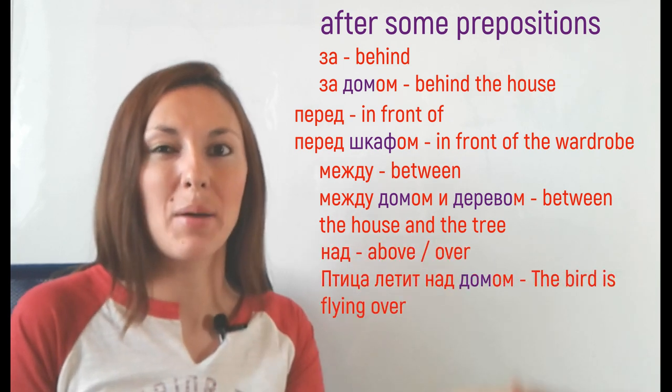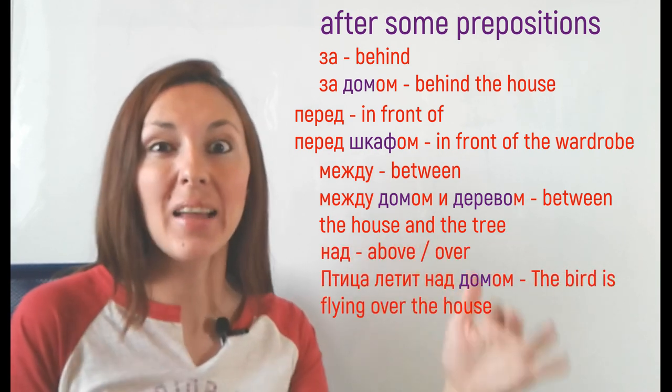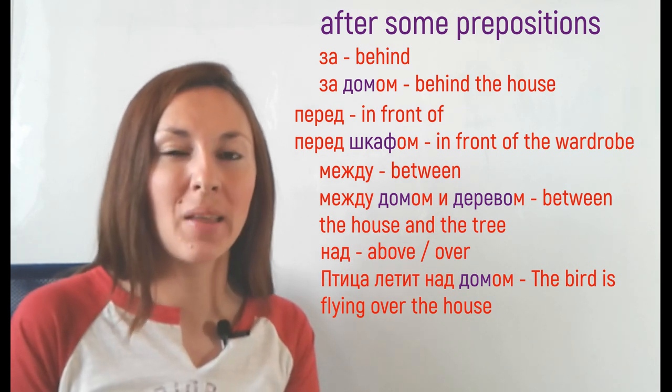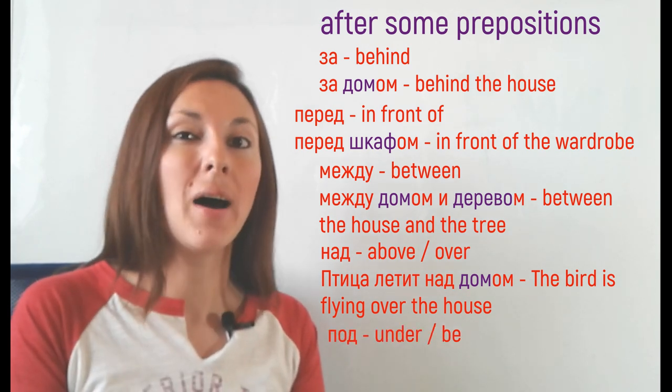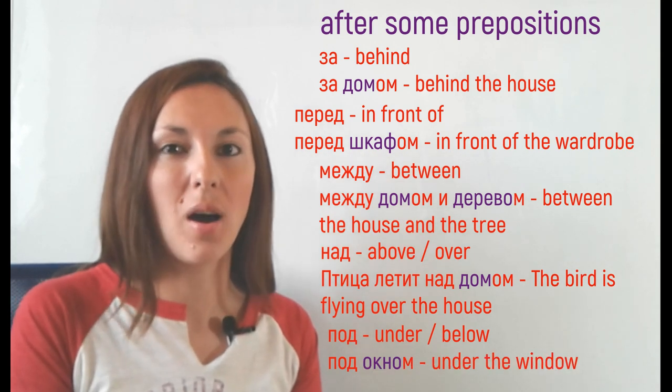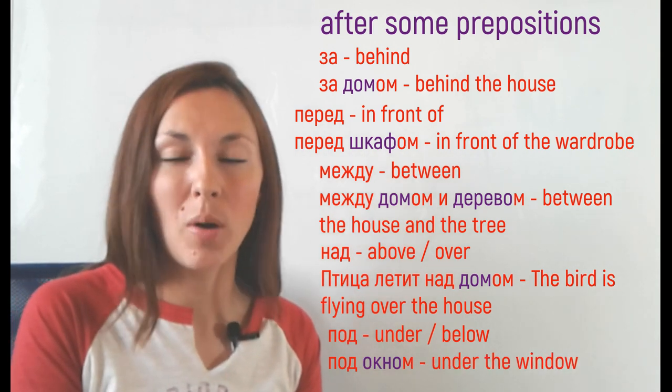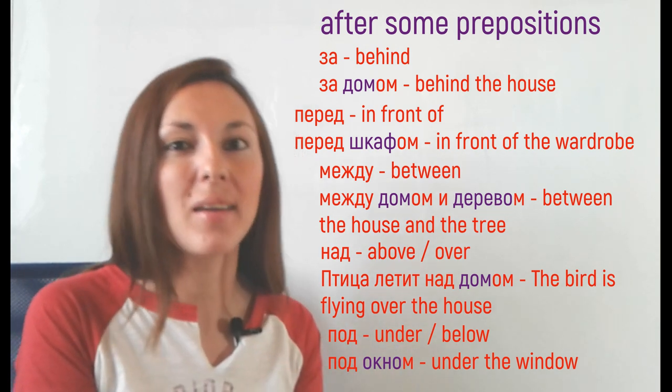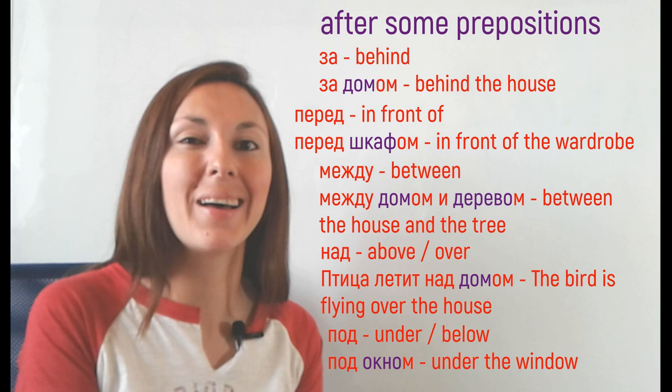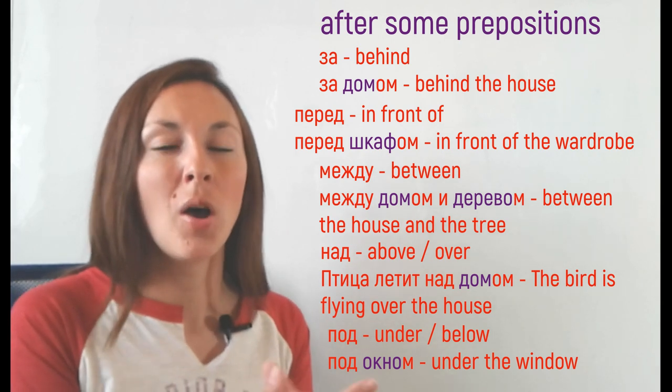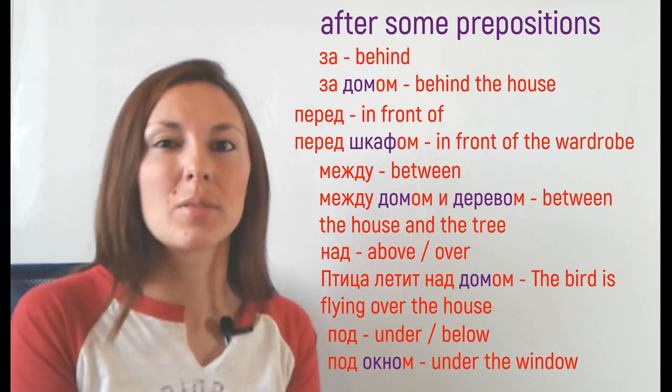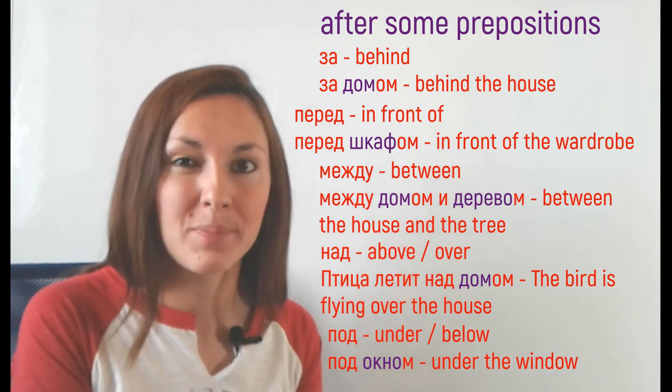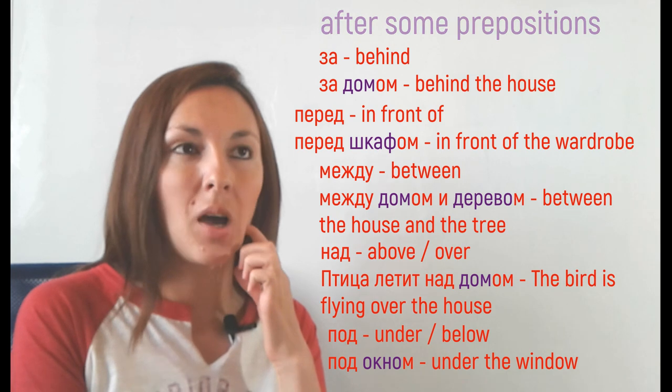Then, НАД, over or above. ПТИЦА ЛЕТИТ НАД ДОМОМ. And finally, ПОД, under or below. ПОД ОКНОМ. ОКНО is a window, we add ОМ again and we get ПОД ОКНОМ. Is there anything in common with all these prepositions? Yes, they are all prepositions of place.